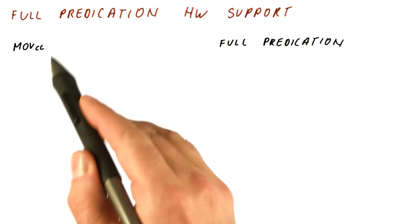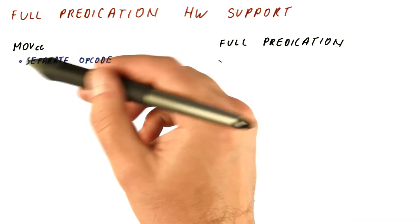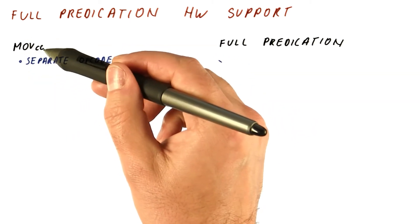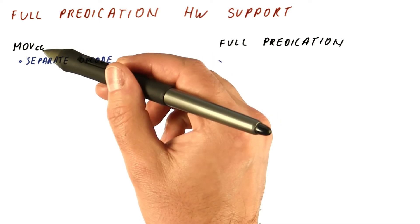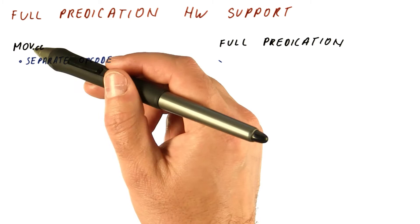Let's compare what we need for conditional moves and what we need for full predication. For the move instructions that are conditional, we need a separate opcode that tells us this is a conditional instruction. Usually, we have a separate opcode for each particular condition. So we need a number of new opcodes.